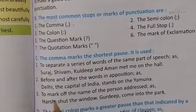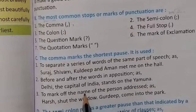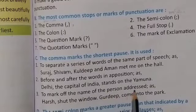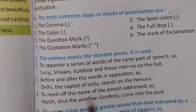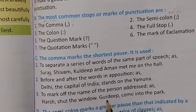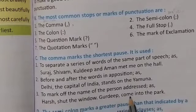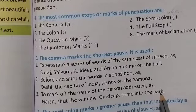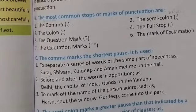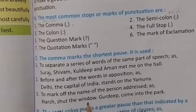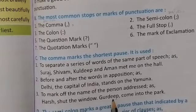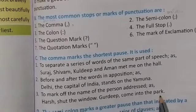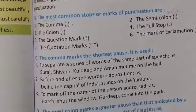Next: the comma is used to mark off the name of the person addressed, as: 'Harsh, shut the window.' 'Gurudeep, come into the park.' हमें address बता रहे हैं — Harsh, shut the window. Gurudeep, come into the park.